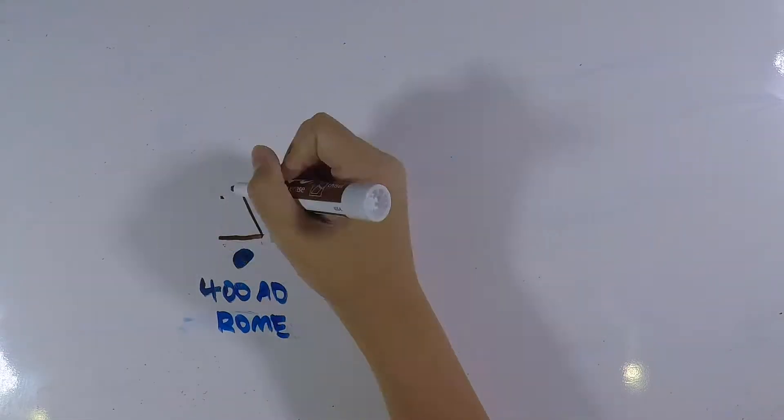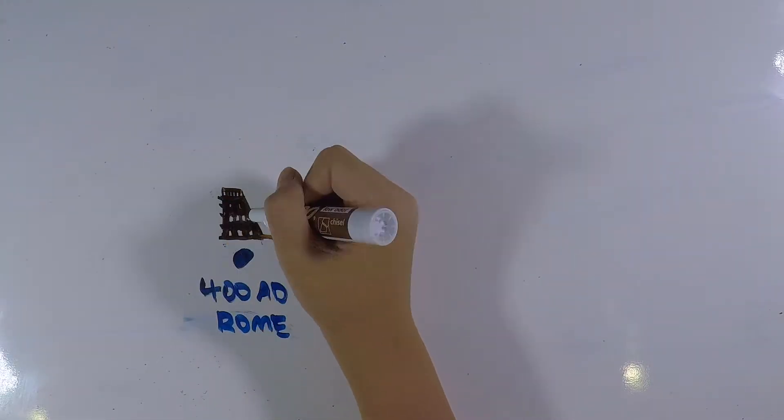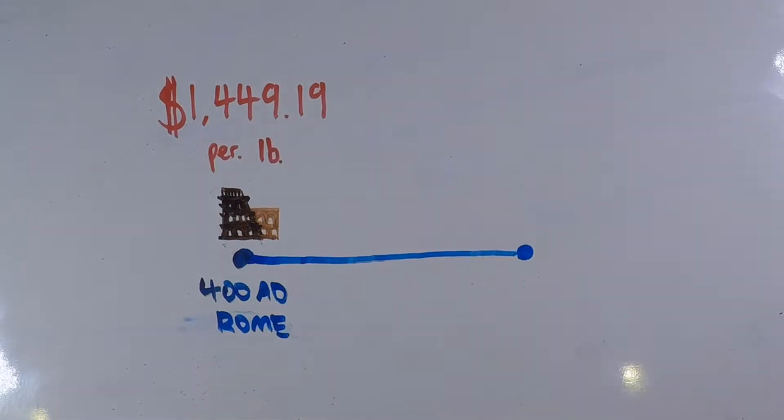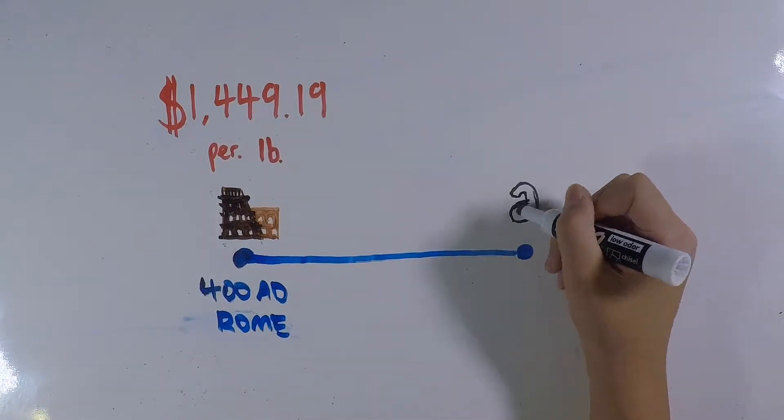In 400 AD Rome, one pound of frankincense cost the entire monthly salary of a commoner at the time. These days, however, you can buy frankincense for just over $10 off of Amazon.